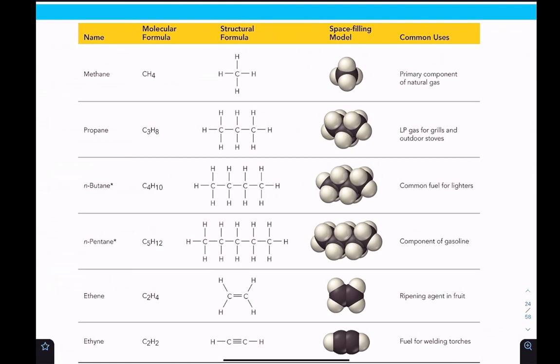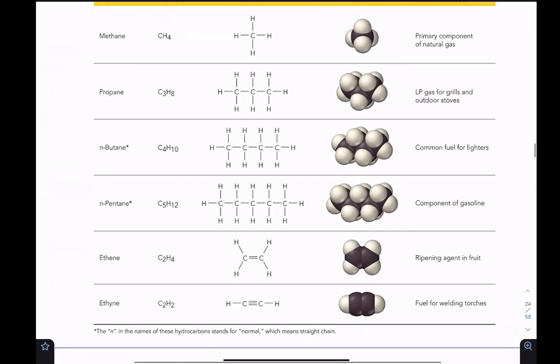For some common hydrocarbons then, methane is the primary component of natural gas. Propane is LP gas which is liquid propane. LP stands for liquid propane. So if you have a propane grill and you go and you fill up a tank with propane you're actually filling it up with liquid propane and then it just at regular pressure it turns into a gas. For our grills and outdoor stoves. Butane is a common fuel for lighters. That's why the lighter, well the longer the carbon gets the more likely it is to be a liquid at room temperature. So butane is a larger molecule than propane and that's why your lighter, if you get a lighter, it doesn't have to be under super high pressure like liquid propane does but it'll still be a liquid.